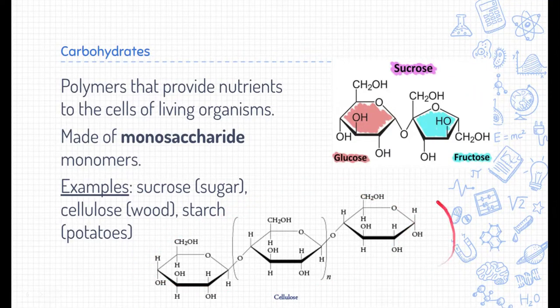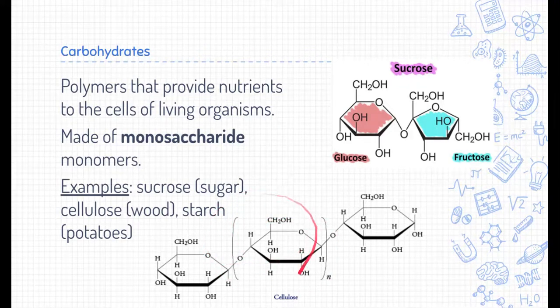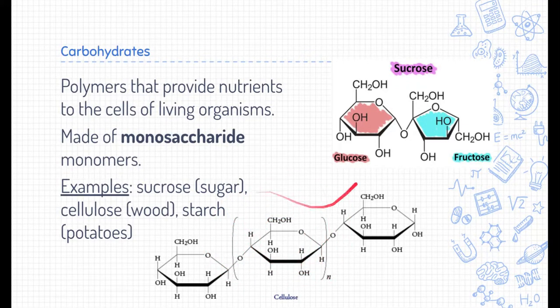Cellulose is another example of a carbohydrate. Cellulose is made of these monomers. You can see this monosaccharide right here in that repeating pattern. Cellulose is often found in wood or paper. One that's not shown here are starches, such as what's found in potatoes.